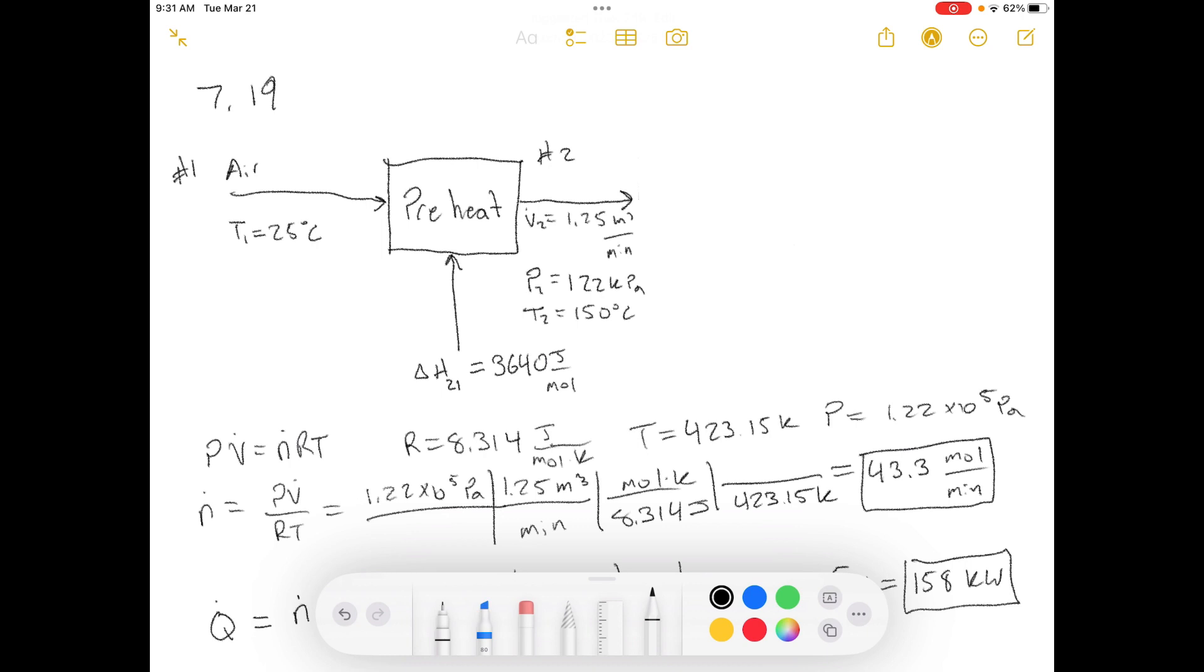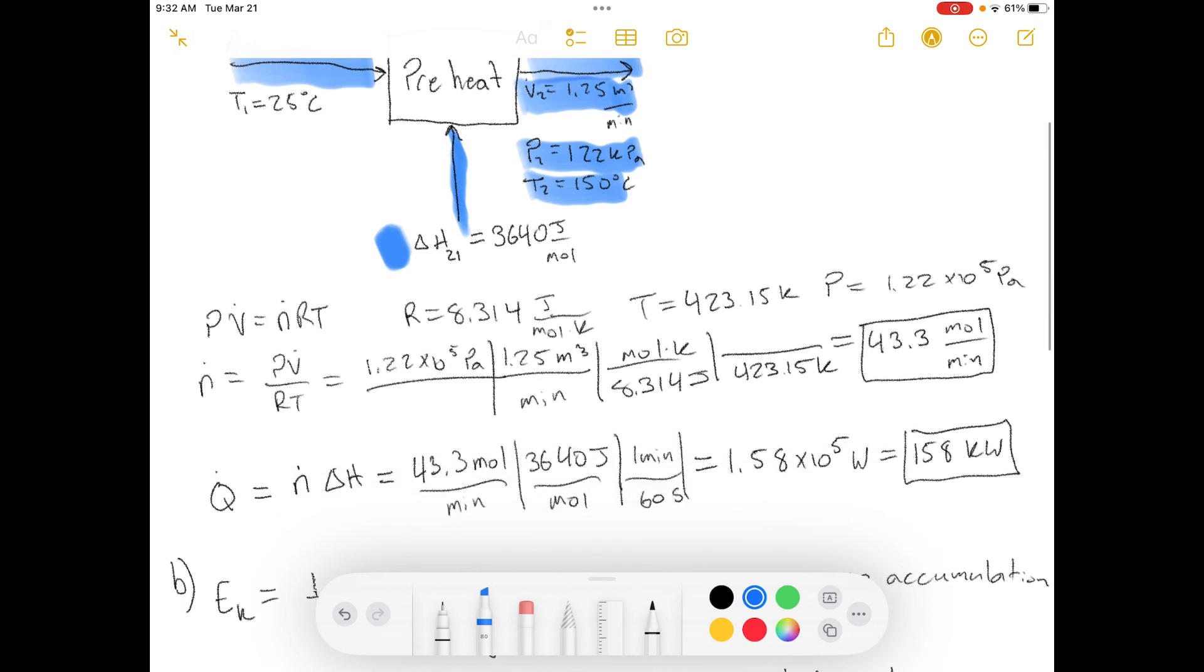So I've got a diagram here of what the question is asking. We have air going into a preheater with a certain amount of energy Q going in that's associated with this enthalpy change, and then we have an outlet here. They gave us the volumetric flow rate at the outlet, the pressure, and the temperature. So they told us to use the ideal gas law, which is pressure times volume equals moles times the gas constant times temperature. And that's the absolute temperature, not Celsius. Celsius is not on an absolute scale.